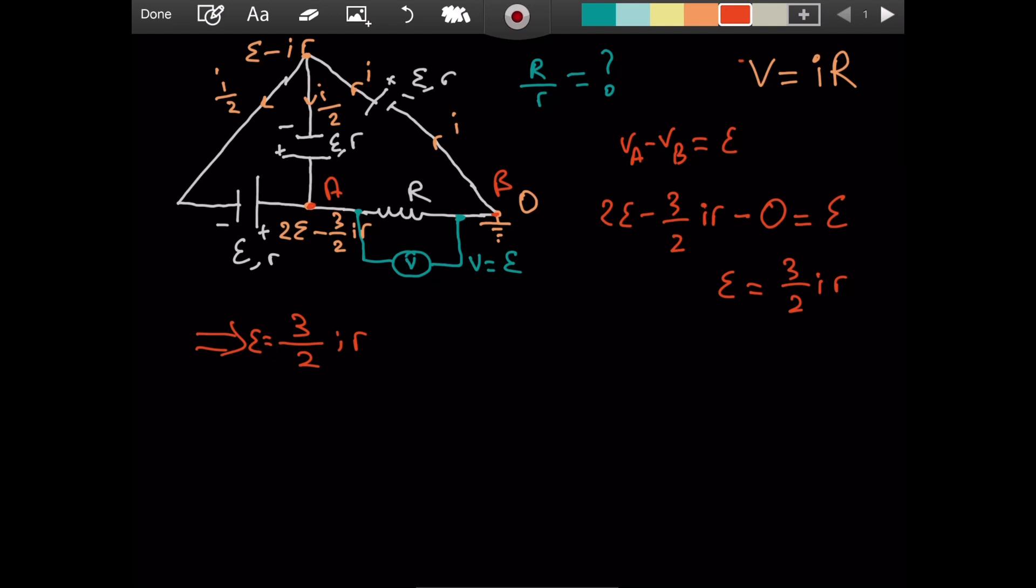Now, what about the current to it? What amount of current flows through it? Well, we had i over 2 here, i over 2 here. They combine at point A. So through the resistor capital R, a current of i flows. So the current is i. And then we have capital R. i's cancel. Nice.